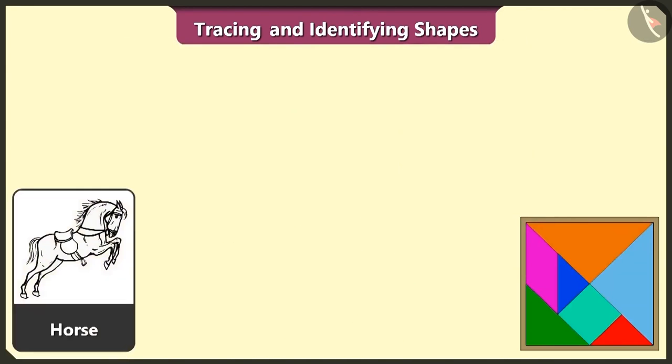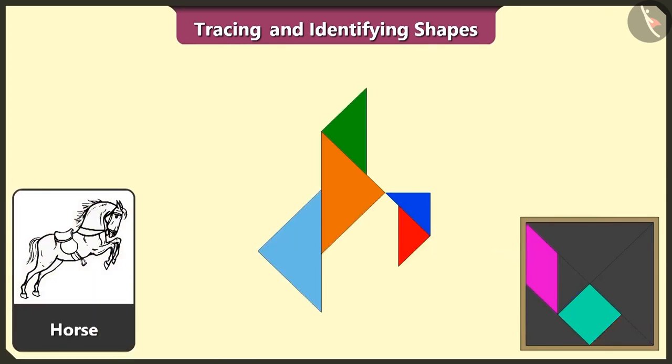This is a horse. Now we will make a horse using 5 triangles, 1 square and 1 quadrilateral. See, the horse is ready.